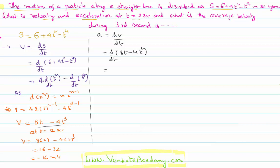Again using the same formula — differentiation of xⁿ = n·xⁿ⁻¹ — differentiation of 8t: t has power 1, so 1×t¹⁻¹ = t⁰ = 1, giving 8×1 = 8. Differentiation of 4t³ gives 4×3×t² = 12t². Therefore acceleration a = 8 − 12t².